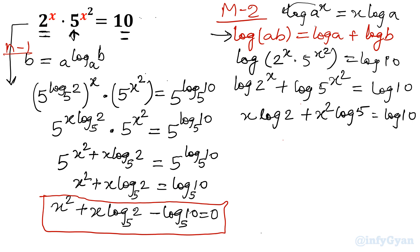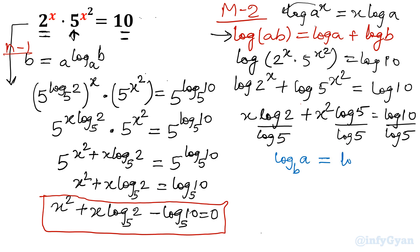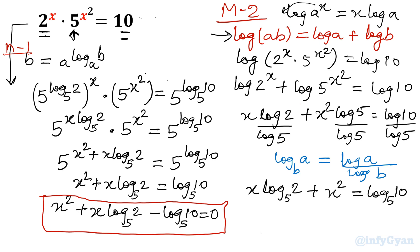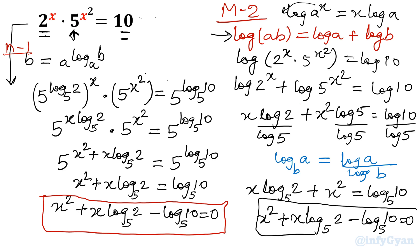Now divide the complete equation by log 5. Applying the third property of logarithms — log a base b can be written as log a over log b — the equation becomes: x log base 5 of 2 plus x squared equals log base 5 of 10. Taking all terms to the left side, the equation comes out the same as calculated by the change of base in Method 1. So you can see both methods give the same equation.